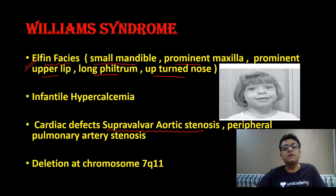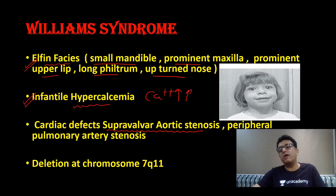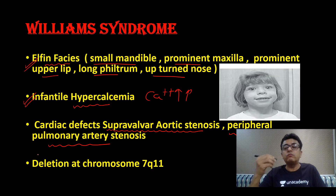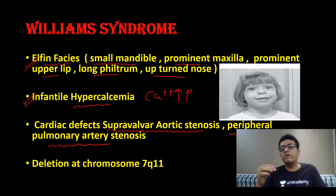First, facial features. Then they have infantile hypercalcemia — calcium levels are high in Williams syndrome. Then cardiac defects: supravalvular aortic stenosis and peripheral pulmonary artery stenosis. The question comes: which is the commonest heart defect in Williams syndrome? It is supravalvular aortic stenosis. To compare: Down syndrome has endocardial cushion defect, Noonan syndrome has pulmonary stenosis, and Williams syndrome has supravalvular aortic stenosis.